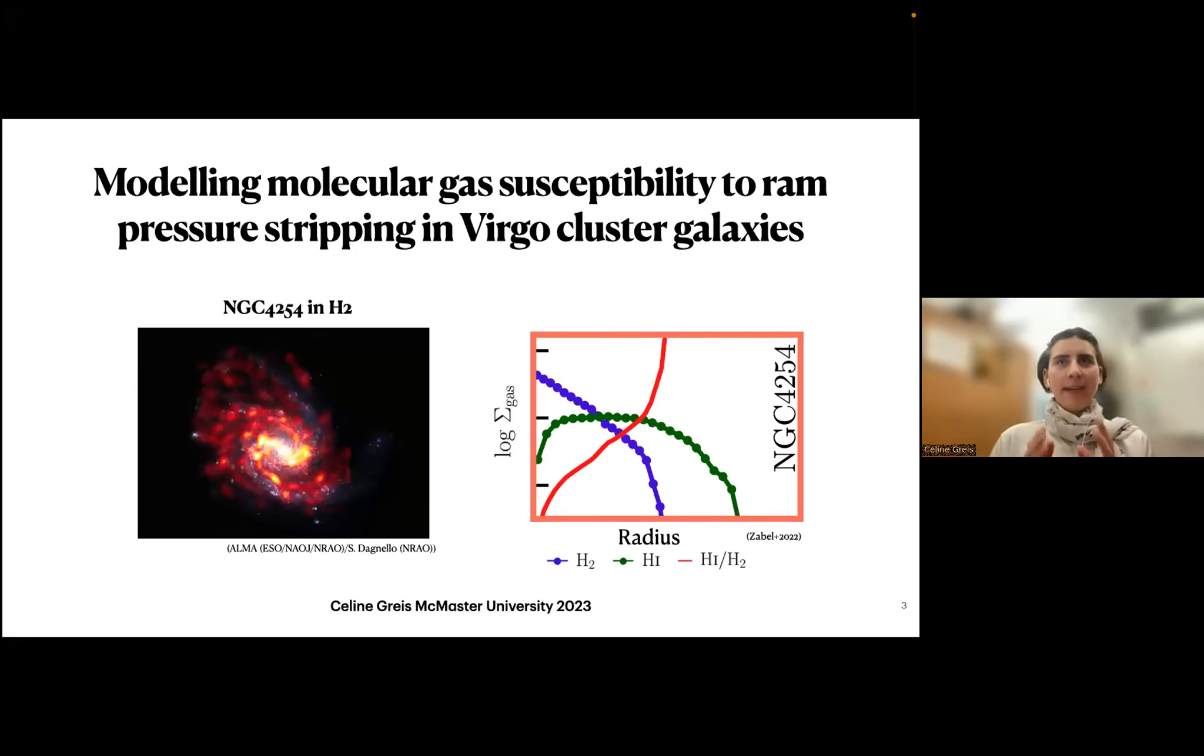You can see on the left side a galaxy of the Virgo cluster and its H2 mapped on top of its stellar emission. You can see that molecular gas is clumped and it has substructure, it's dense. In my research project, we are wondering in what way is the molecular gas affected by ram pressure stripping? We're wondering where is the molecular gas of a galaxy affected and how much of it is affected? That's now possible to take these fine structures into account because we have high resolution ALMA data, part of the FANGS survey.